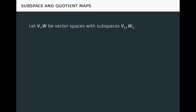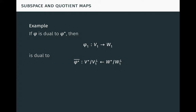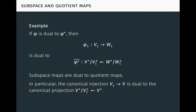Now let V and W be vector spaces with subspaces V1 and W1. If phi is a linear map from V to W which maps V1 into W1, there are induced subspace and quotient maps: phi1 from V1 to W1, and phi-bar from V mod V1 to W mod W1, making this diagram commute. Here phi1 of x equals phi x for all x in V1, and phi-bar of x-bar equals phi x bar for all x in V, where the bars denote projection. This leads to another important example: if phi is dual to phi-star, then phi1 from V1 to W1 is dual to phi-star-bar from W-star mod W1-complement to V-star mod V1-complement. This extends our previous example showing that subspace maps are dual to quotient maps. In particular, the canonical injection from V1 into V is dual to the canonical projection onto V-star mod V1-complement from V-star.